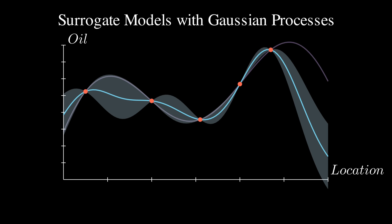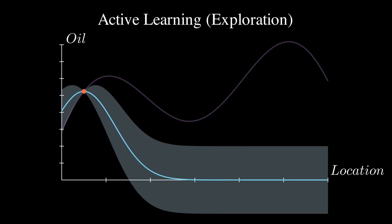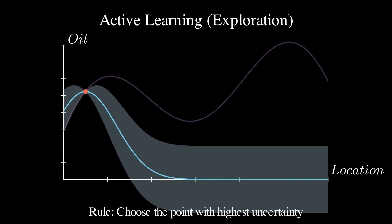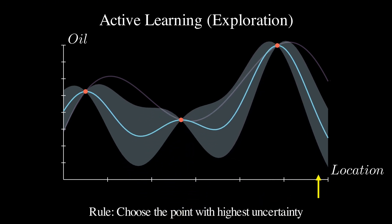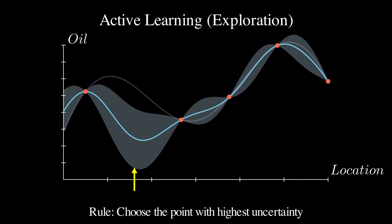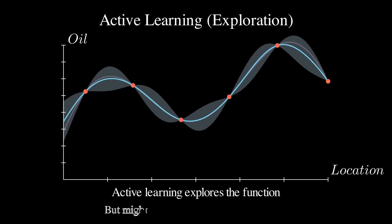As we collect more data points by drilling at new locations, our model continuously updates, improving its predictions and shrinking those uncertainty bands around areas we have explored. If our goal was just to accurately model the entire oil distribution, we would use active learning — always drill where our uncertainty is highest. This ensures we explore the whole area effectively, reducing uncertainty everywhere. But while this gives us a great map of oil distribution, it might take many expensive drilling operations before we find the maximum.